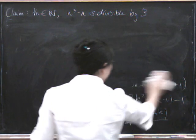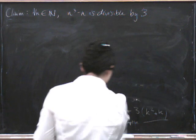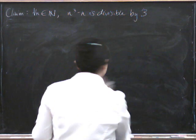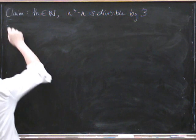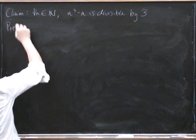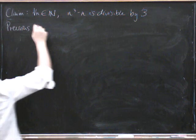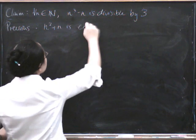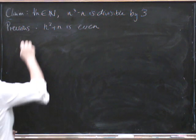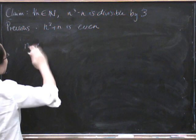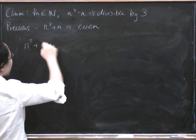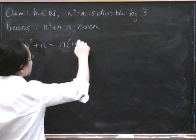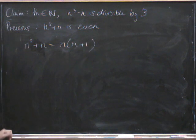So let's have a look at the previous one as well. We've got time. So in the previous one, the previous one was n squared plus n is even.